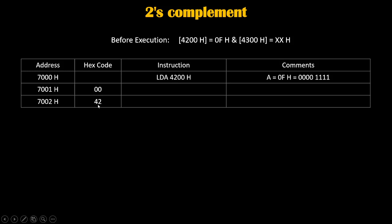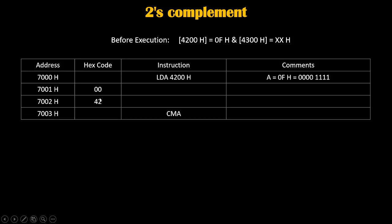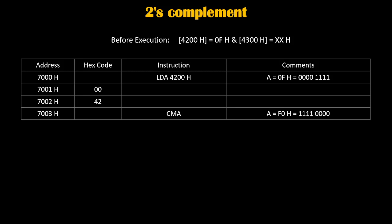After that, we write the CMA instruction. CMA stands for Complement Accumulator, so it takes the 1's complement of the number stored in the accumulator. The accumulator value was 0fh, so after CMA the new value becomes f0h — the four zeros become four ones and the four ones become four zeros. CMA is a single-byte instruction, so it takes only one memory location.